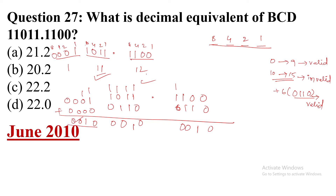The result in binary notation is 0010 0010 point 0010. Now we need to convert this to decimal.